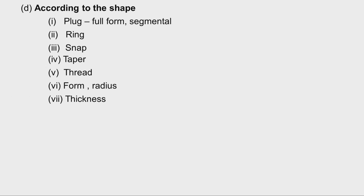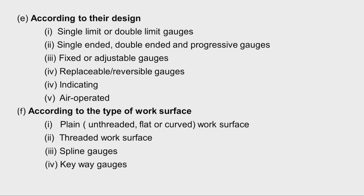According to the shape of the gauges, they are classified as plug gauges — like full form plug gauge and segmental plug gauge — and then ring gauges, snap gauges, taper gauges, thread gauges, form gauges, and thickness gauges. According to their design, they are classified as single limit or double limit gauges, single ended, double ended or progressive gauges, fixed or adjustable gauges, replaceable or reversible gauges, and indicating gauges. Where air is used for gauging, they are called air gauges.